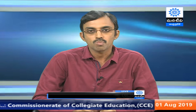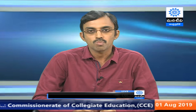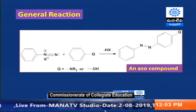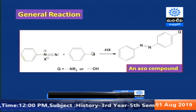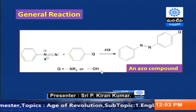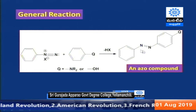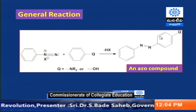This is the general reaction of the diazo coupling reaction. As shown in the slide, this is an arene diazonium ion, which will undergo reaction with the highly reactive aromatic system. Here, Q may be an alkoxy group, hydroxy group, or an amino group. This is the azo compound that we will obtain, with two aromatic systems having conjugated bonds linked through the N=N bond.